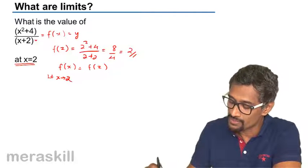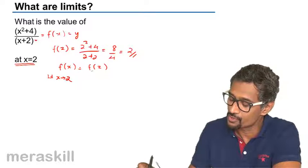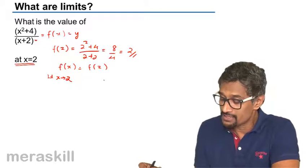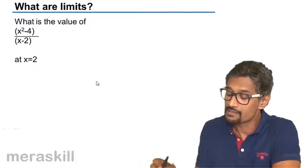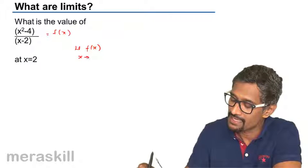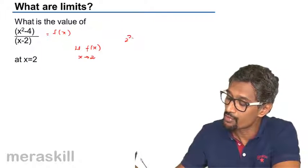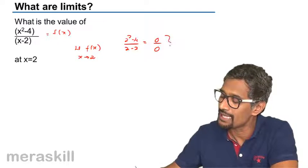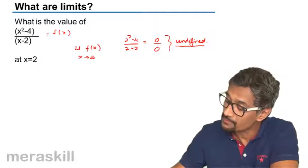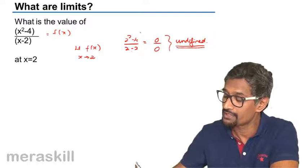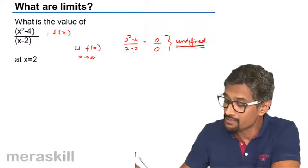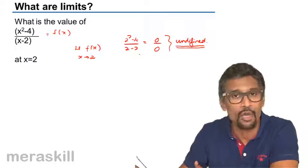In simple cases you can find the limit just by substituting the value of x. But suppose you have f of x equals x squared minus 4 upon x minus 2, and you are asked to find the limit as x approaches 2. If you substitute, you get 0 upon 0, which is undefined. When x is equal to 2 the value is undefined, but when x is not 2 it is defined.